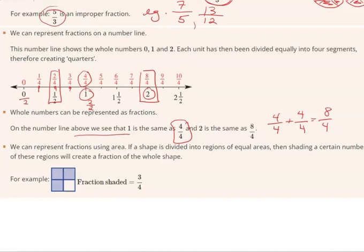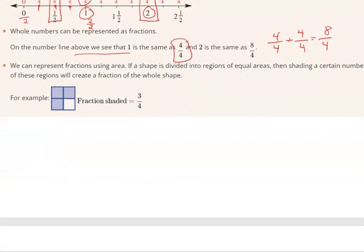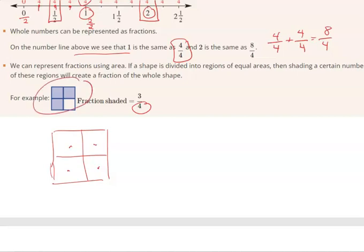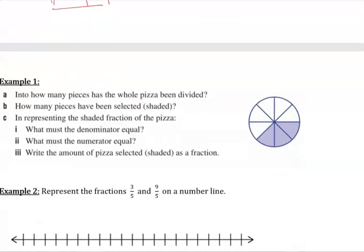We can represent fractions using area if a shape is divided into equal regions. In this example, we've got a shape equally laid out. So I've got one, two, three, four possibilities. That's why my denominator is four. And as you can see in the shape, only three of those are selected, therefore my numerator is three. So three of the possible four in this scenario.